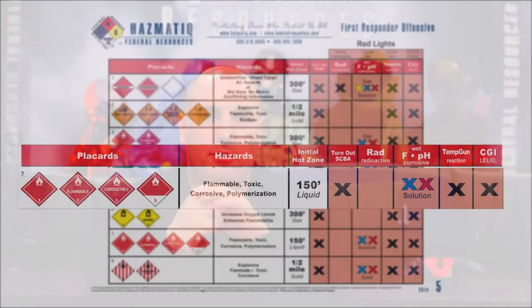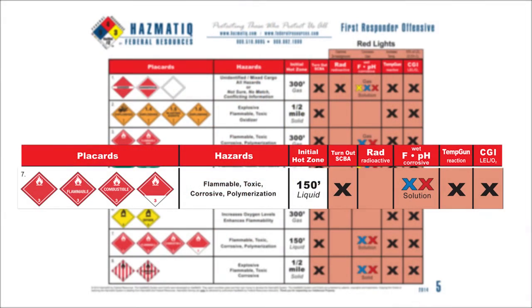If the liquid that's spilled on the ground is not at least 140 degrees, it's not going to be flammable today — it's one less hazard that we have to deal with. As you go across the charts, we see the hazards that can be included in that placard, including flammable, toxic, corrosive, polymerize, and it could form a peroxide.